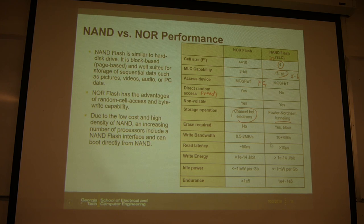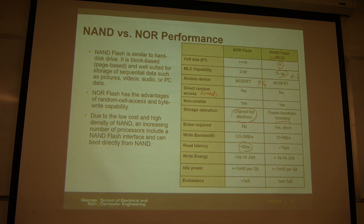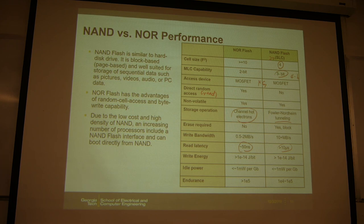The operation mechanism — the device physics to program or erase data — is also different between NOR and NAND. For NOR flash, the mechanism is channel hot electron injection. For NAND flash, it is Fowler-Nordheim (FN) tunneling. Regarding erase, NAND flash requires block erase. However, NAND's write bandwidth is actually a bit higher because you erase the whole block at once. For read latency: NOR is fast — as fast as 50 nanoseconds — while NAND is slow, more than 10 microseconds.